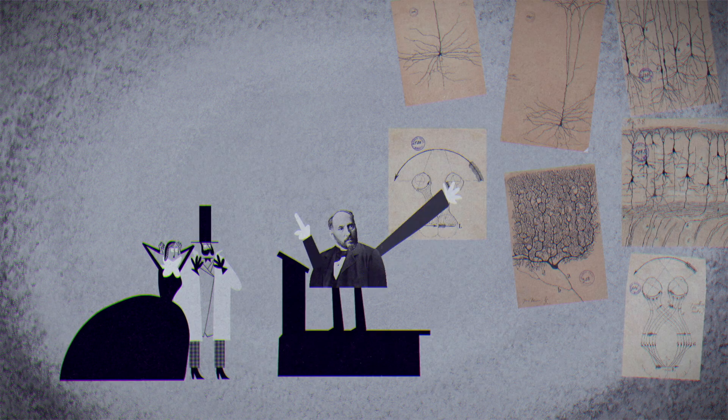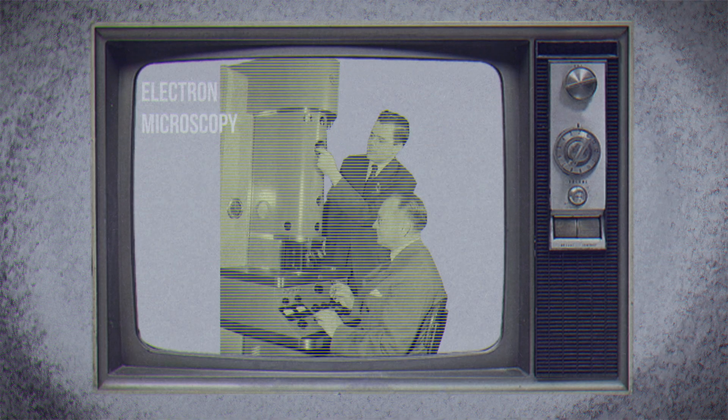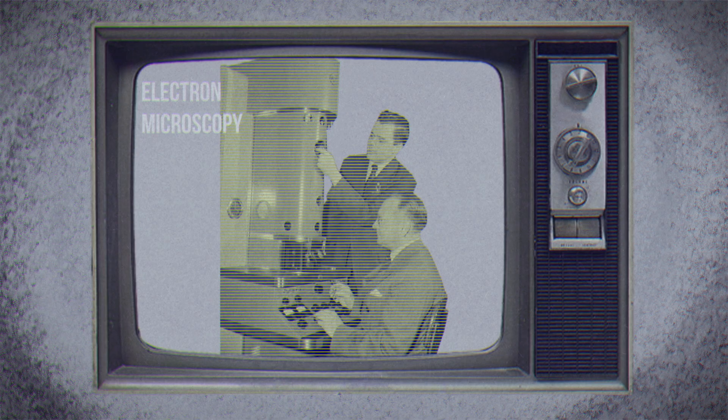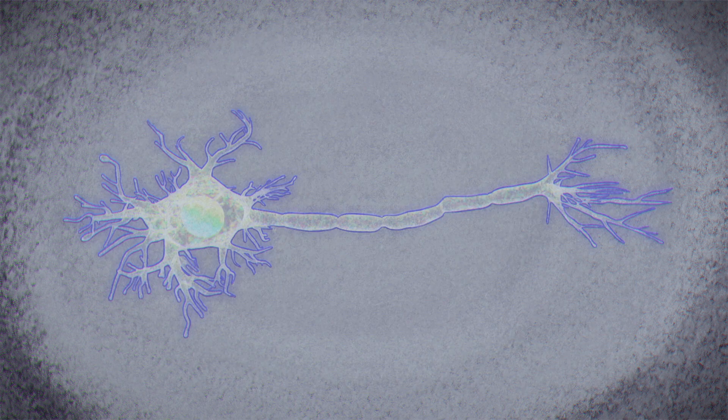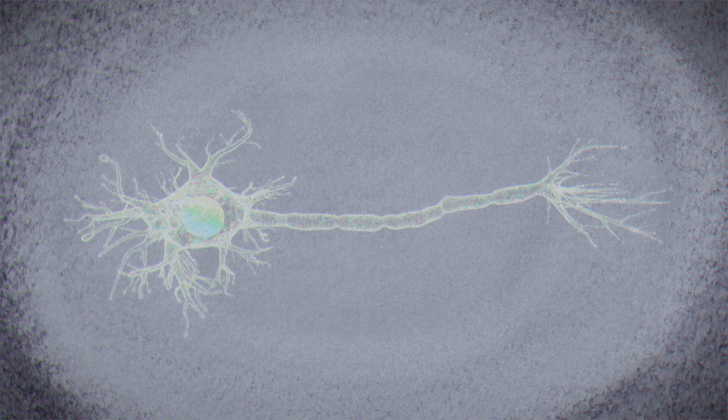However, his massive collection of drawings supported his hypothesis from every angle. And in the mid-1900s, electron microscopy further supported this idea by revealing a membrane around each nerve cell, keeping it separate from its neighbors.